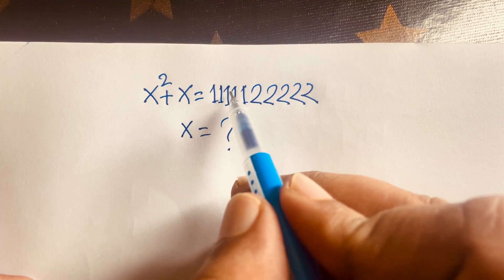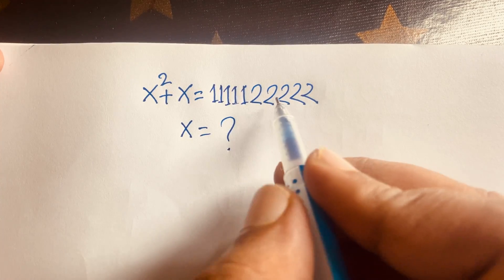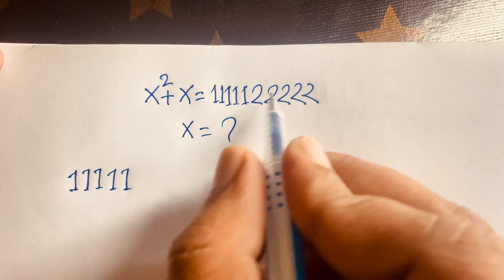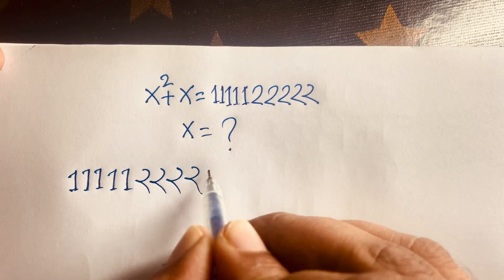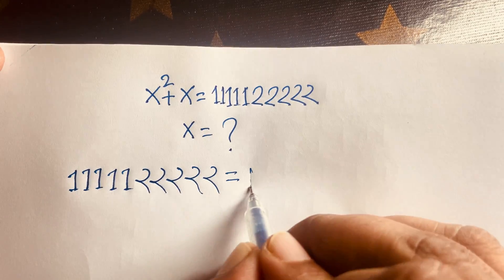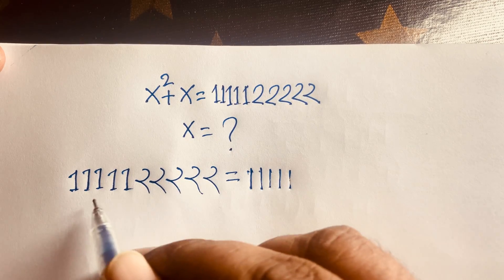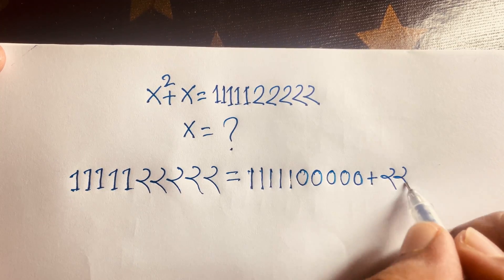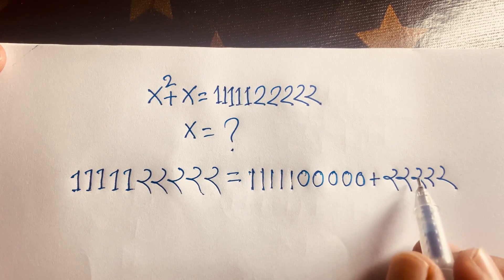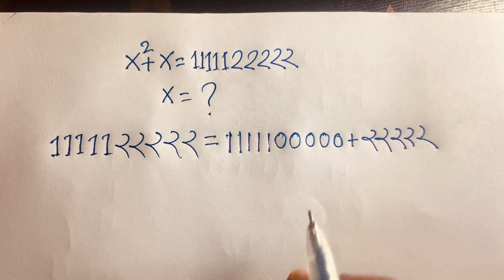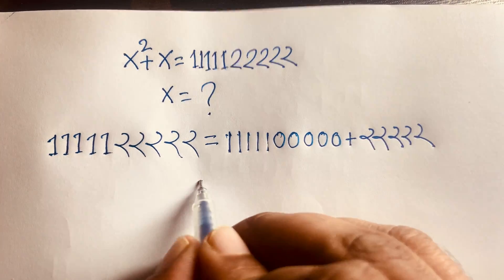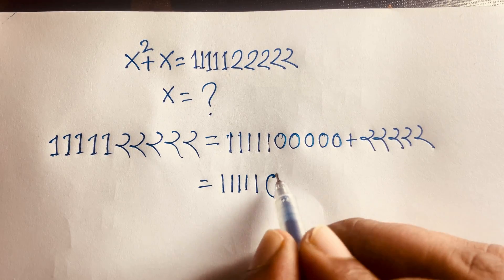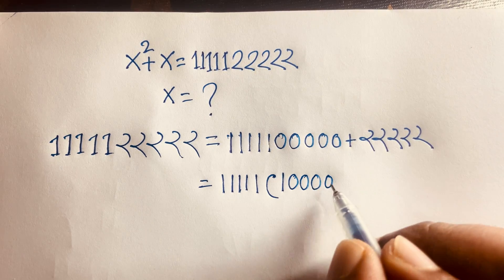Here we have 5 ones and 5 twos. Taking this value, here is 11111 and here is 22222. So I can see it will be 11111 here, and here is 51. I take 00000 plus, and at this moment I can see it will be 22222.